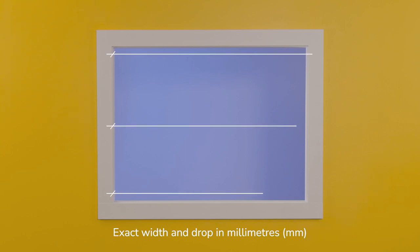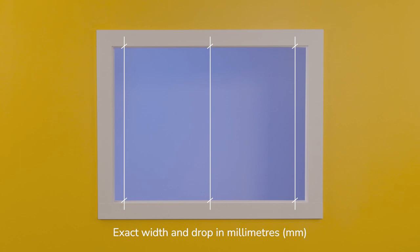When measuring, be sure to use exact width and drop measurements down to the millimetre. This will allow your new blind to best fit your window. You do not need to make any deductions. We will do this for you. Measure each window you wish to cover, as there are generally small size differences from window to window.